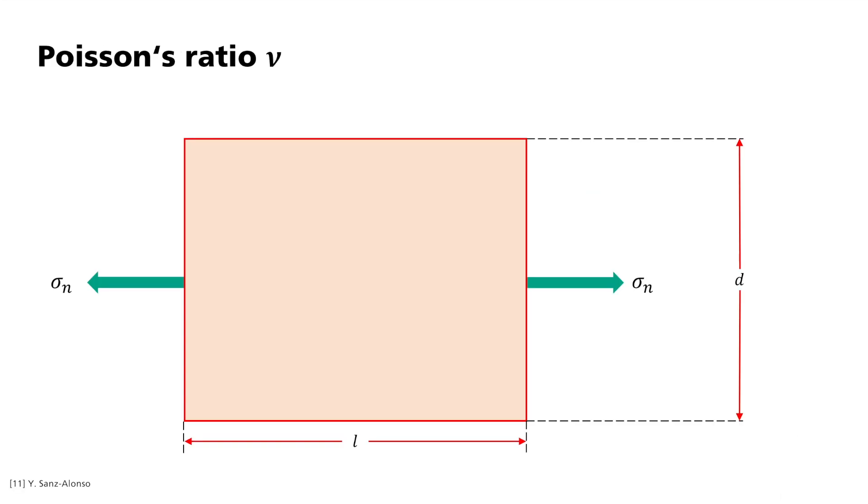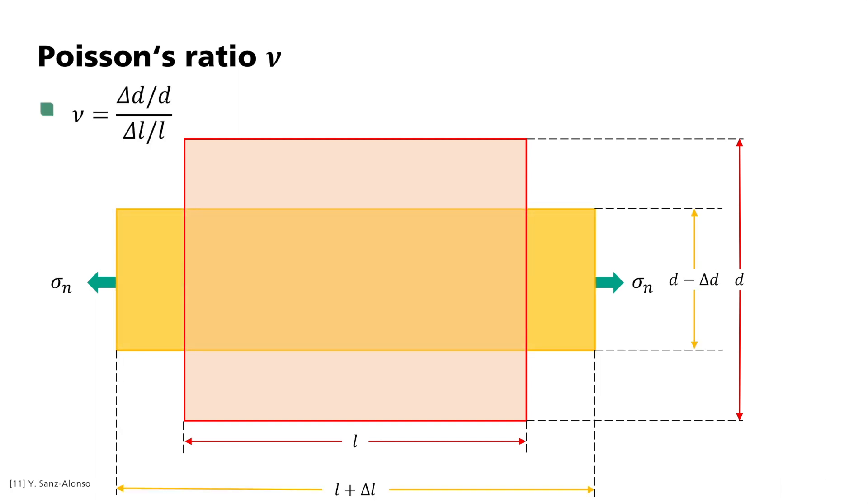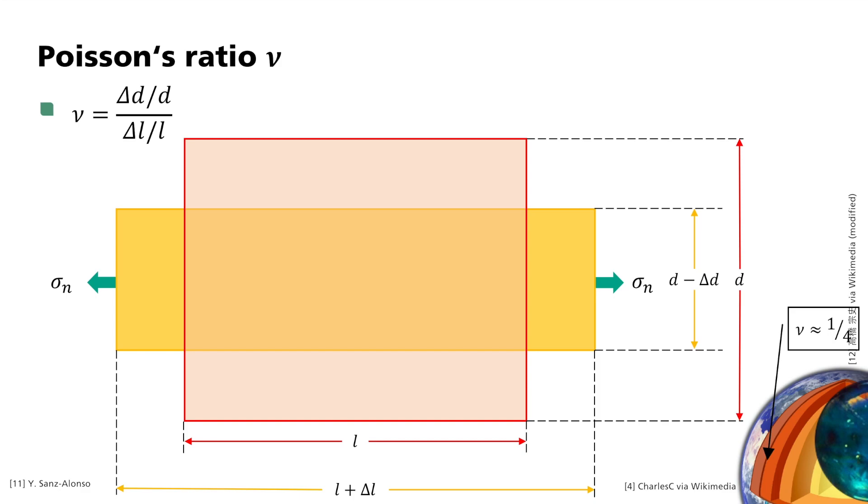Fifth, Poisson's ratio. It is represented by nu and describes how elastic a body is. It is defined via the behavior during longitudinal compression. Here, the length L decreases by delta L and the diameter D simultaneously increases by delta D. Maximum values are achieved for gases and liquids. They do not change their volume during compression. Here, nu has a value of one-half. For ideally elastic bodies, it is one-quarter. This applies as a first approximation for the earth's crust and mantle, and of course for the rubber ball. We call these media Poisson bodies.